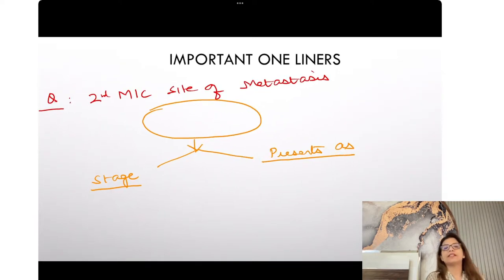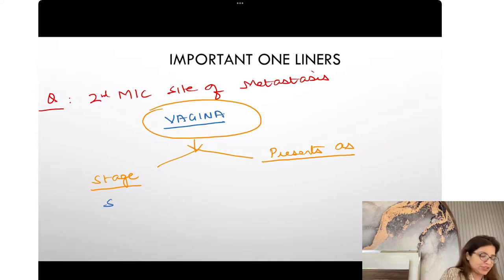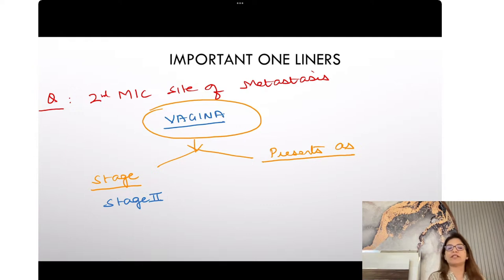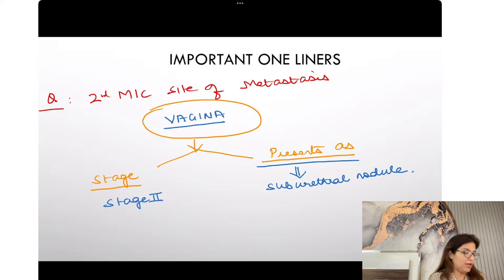The second most common site for metastasis is the vagina. When GTN metastasizes to the vagina, that is stage 2. It presents as a sub-urethral nodule — just below the urethra, you are going to get a nodule.